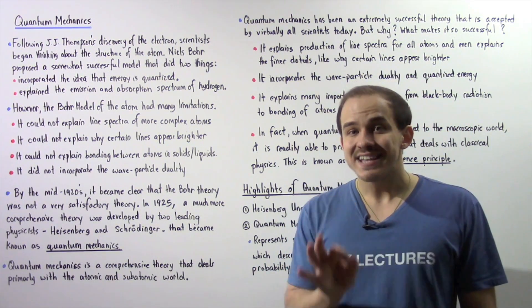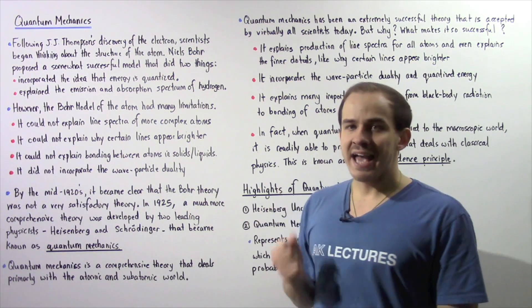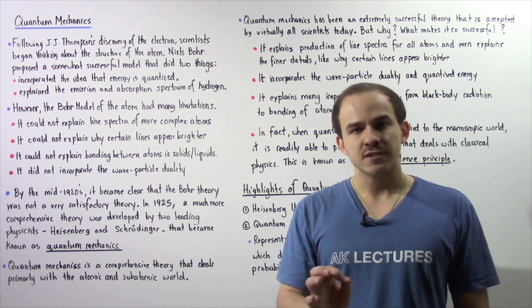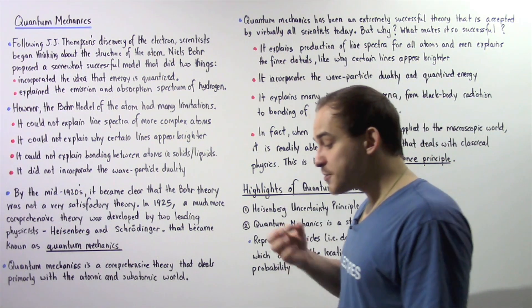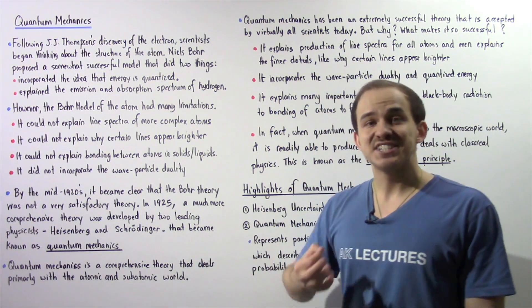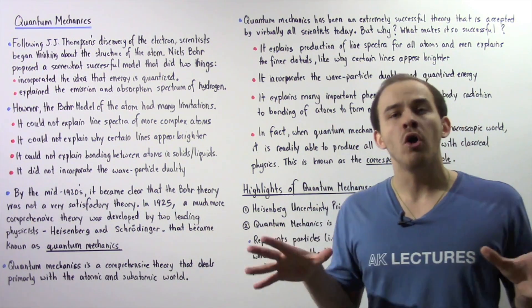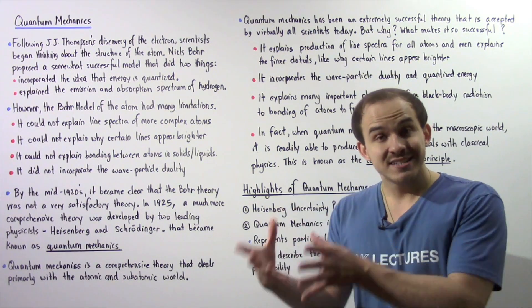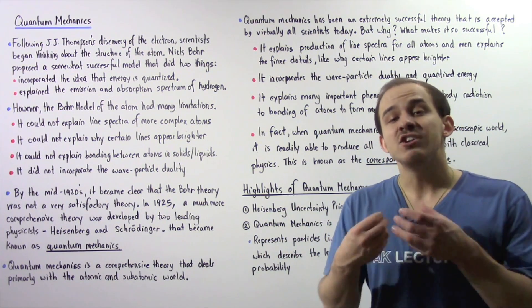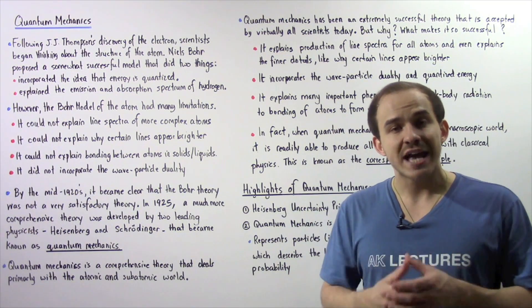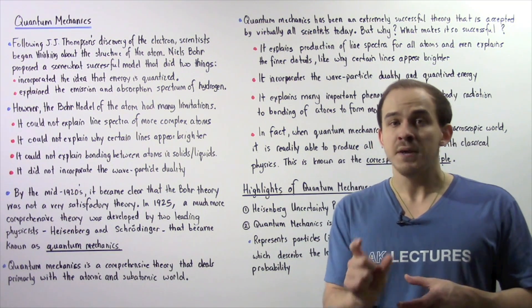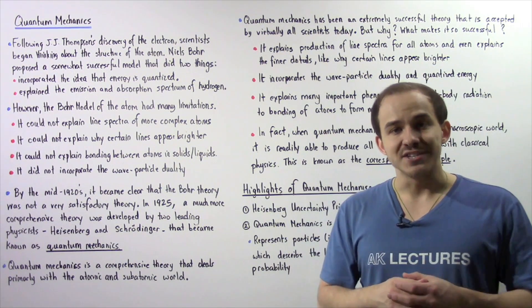But why? What exactly made quantum mechanics such a successful theory? Well, firstly, quantum mechanics explained the production of line spectrum produced by all different types of atoms, simple and complex. And it also explained the finer detail of the line spectrum, such as why certain lines appear brighter than other lines.